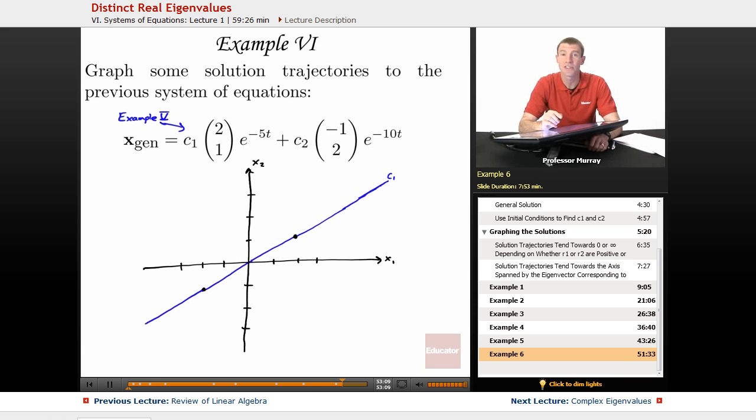I'm going to now look at the second eigenvector, which is negative 1, 2. So negative 1 in the horizontal direction, 2 in the vertical direction. There it is right there. There's its negative. So let me set up an axis coming down through there.